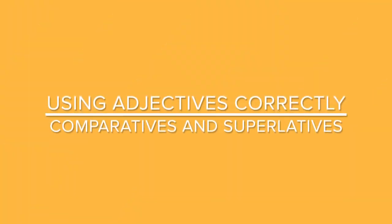Let's now turn to the second area where mistakes are very common, and that is comparatives and superlatives. What are comparatives and superlatives? Well, these are words that help you to compare nouns — people, places, animals, things, etc. — and we do that using adjectives.